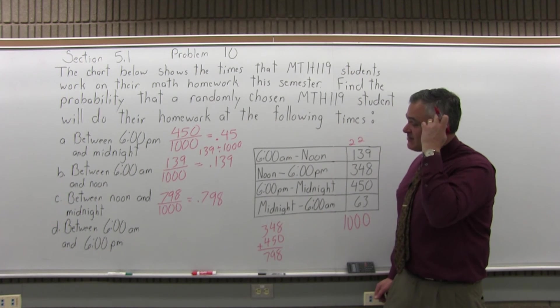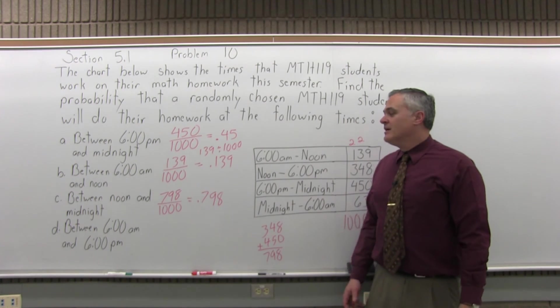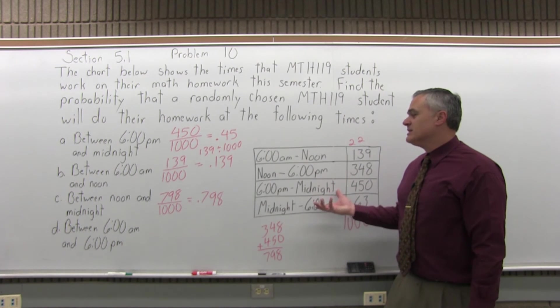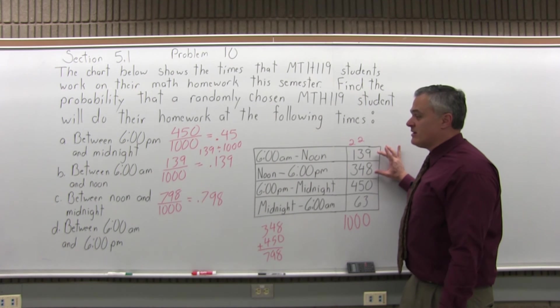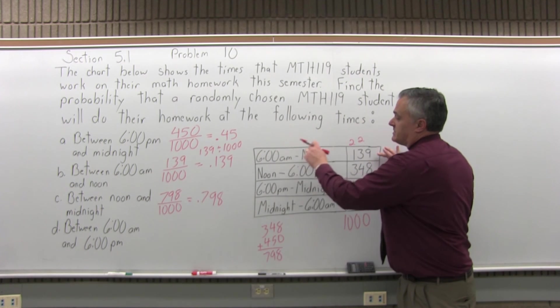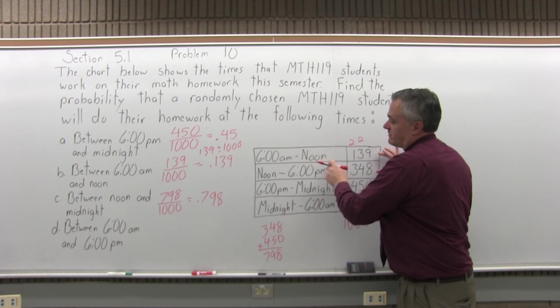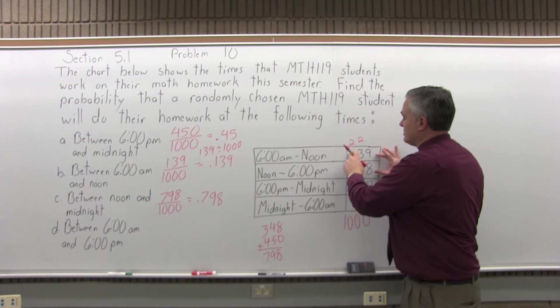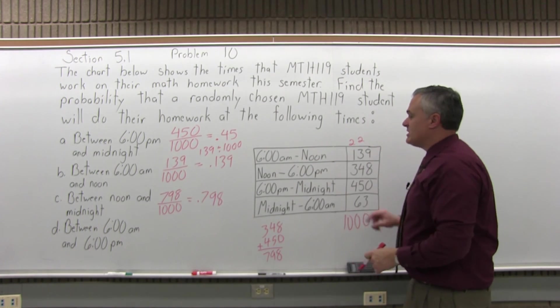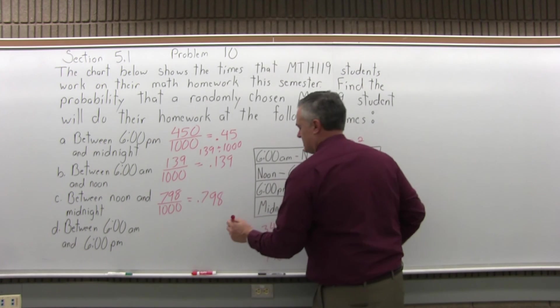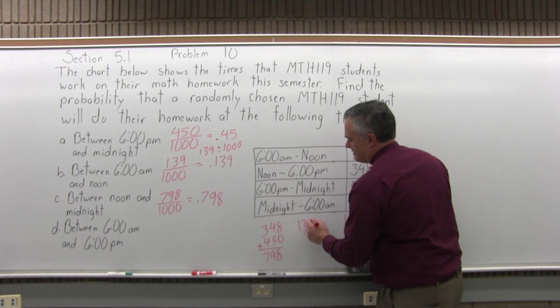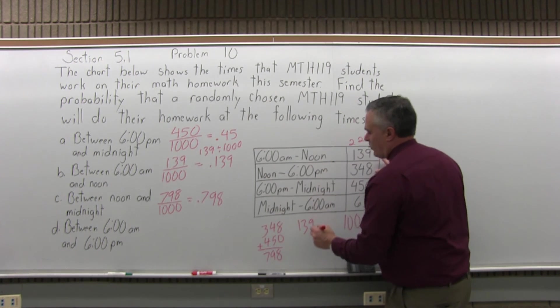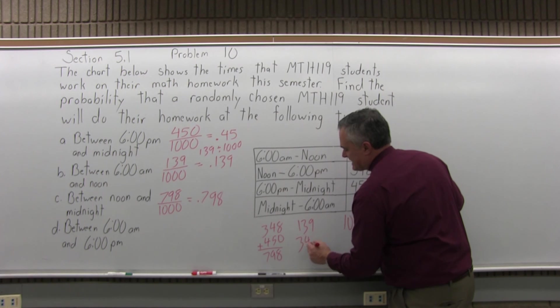Again, there's no time interval that's listed between 6 a.m. and 6 p.m., but if you add the top two intervals together, it will give you from 6 a.m. to 6 p.m. The top interval from 6 a.m. to noon and the second interval from noon to 6 p.m., if I add these two together, that will give me how many students do their math homework between 6 a.m. and 6 p.m. So I have 139 from the top interval and 348 from the second interval.